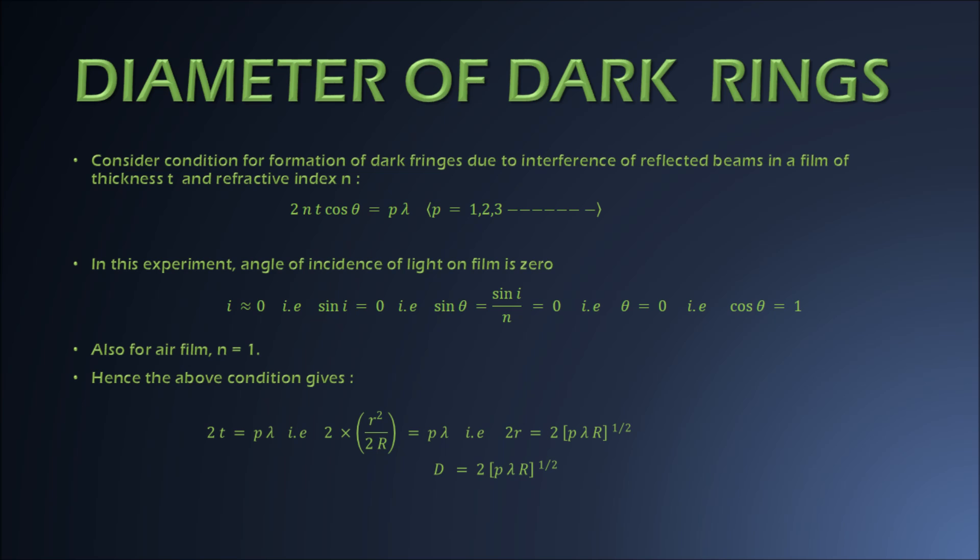For the diameter of dark rings, we write the relation for formation of dark rings in the interference of reflected rays in a thin film of thickness t. Using this relation we can calculate an expression for the diameter of dark rings. This completes the theory about the formation of Newton's rings — the radius of bright rings, the radius of dark rings, and the relation between radius and thickness of the air film.